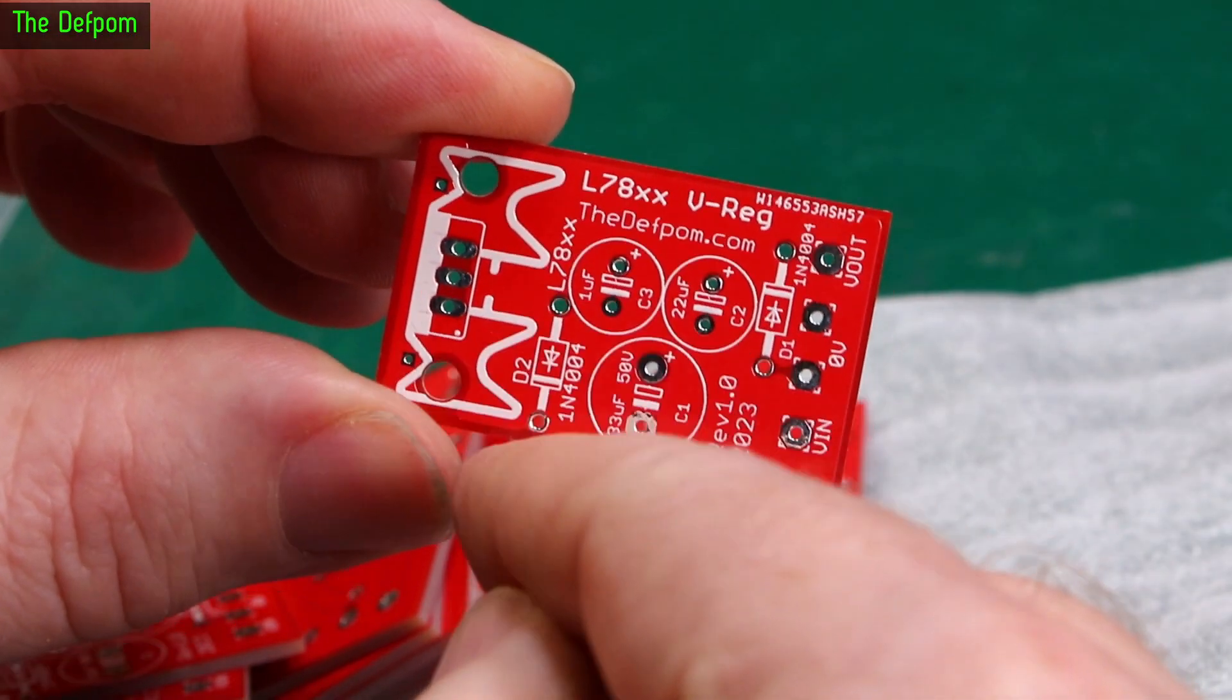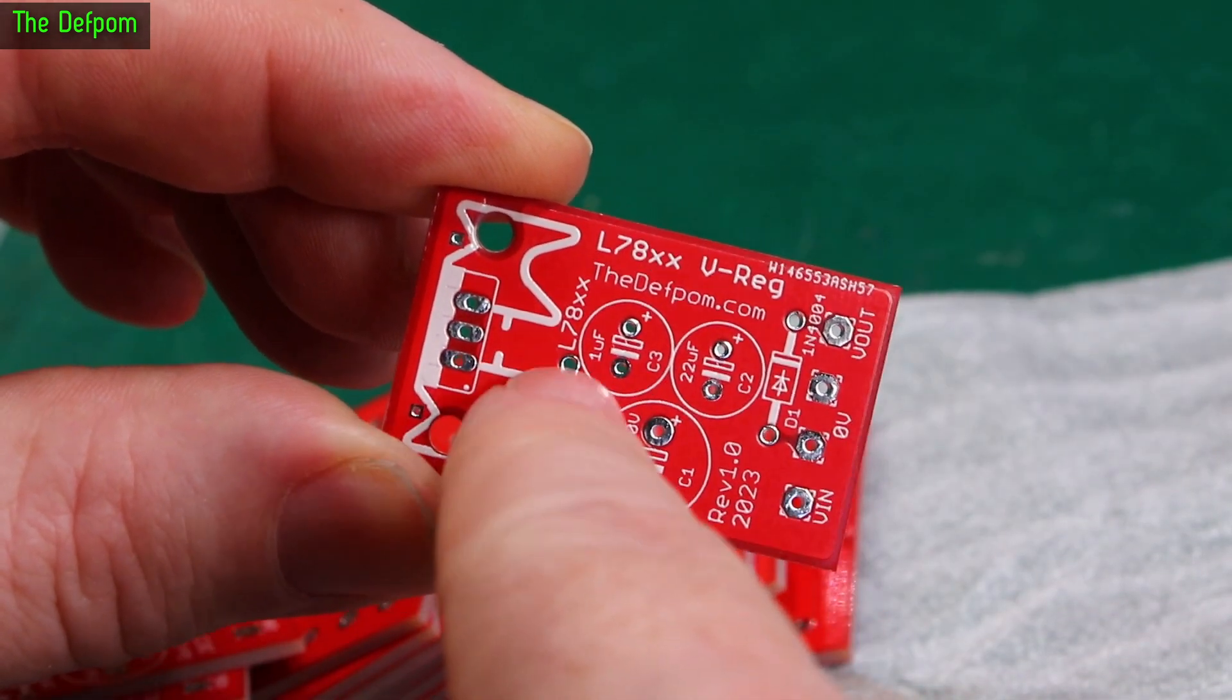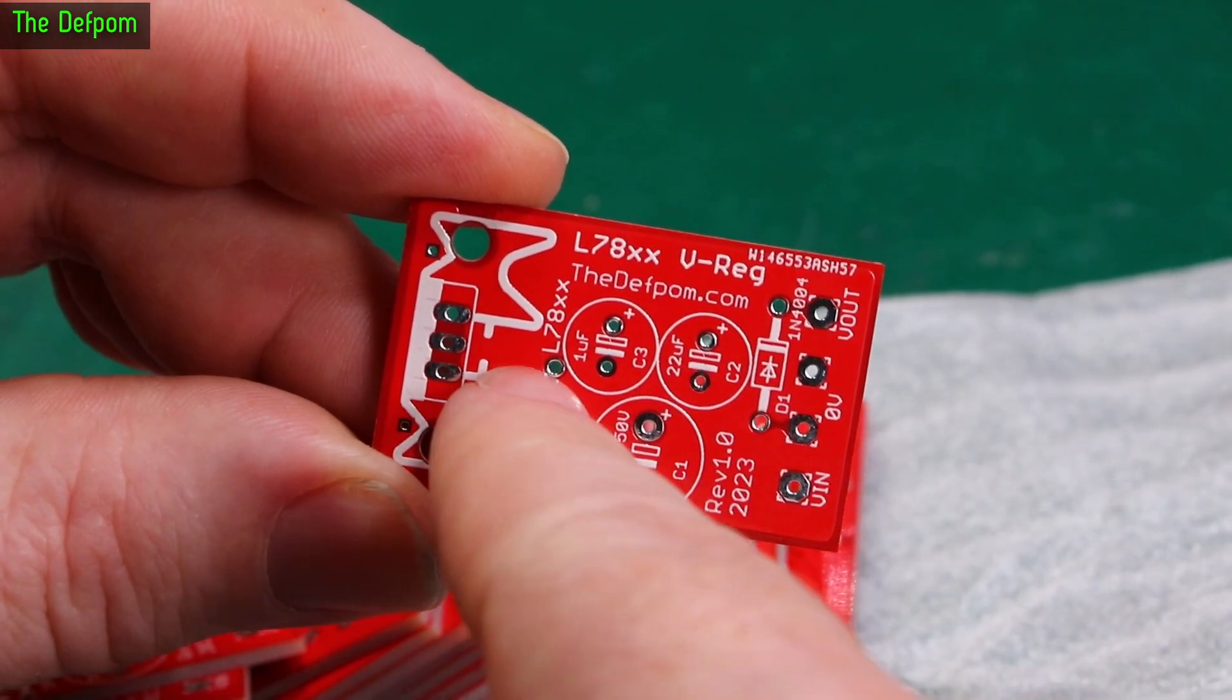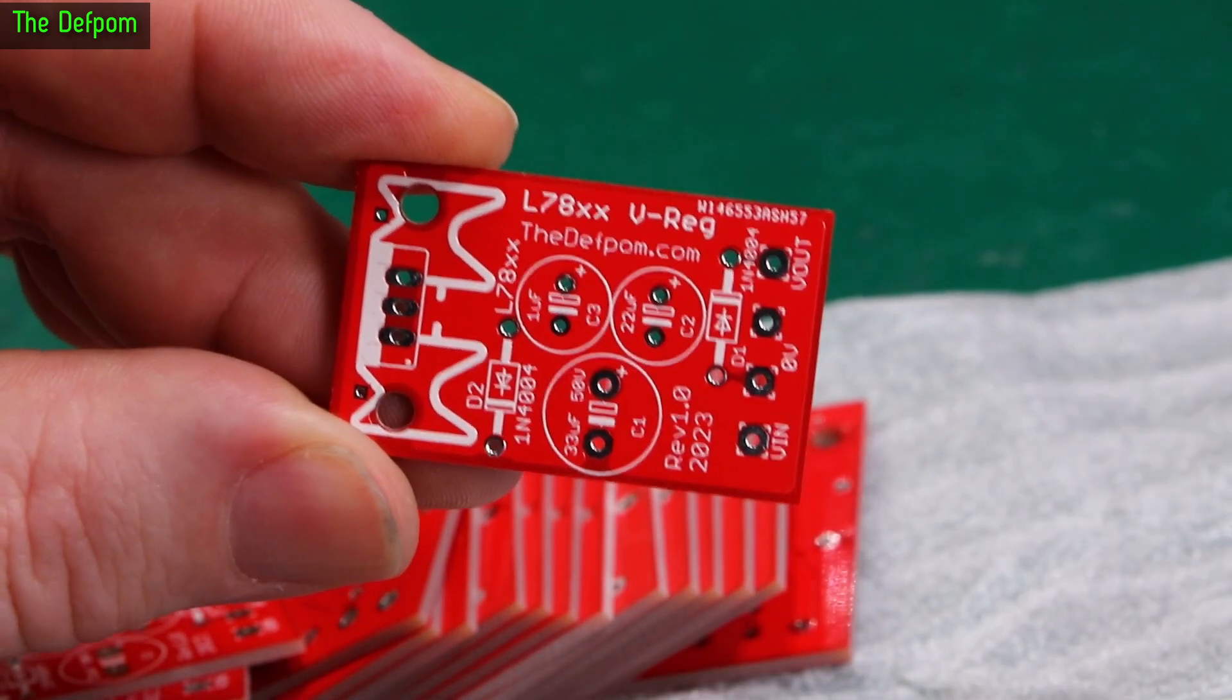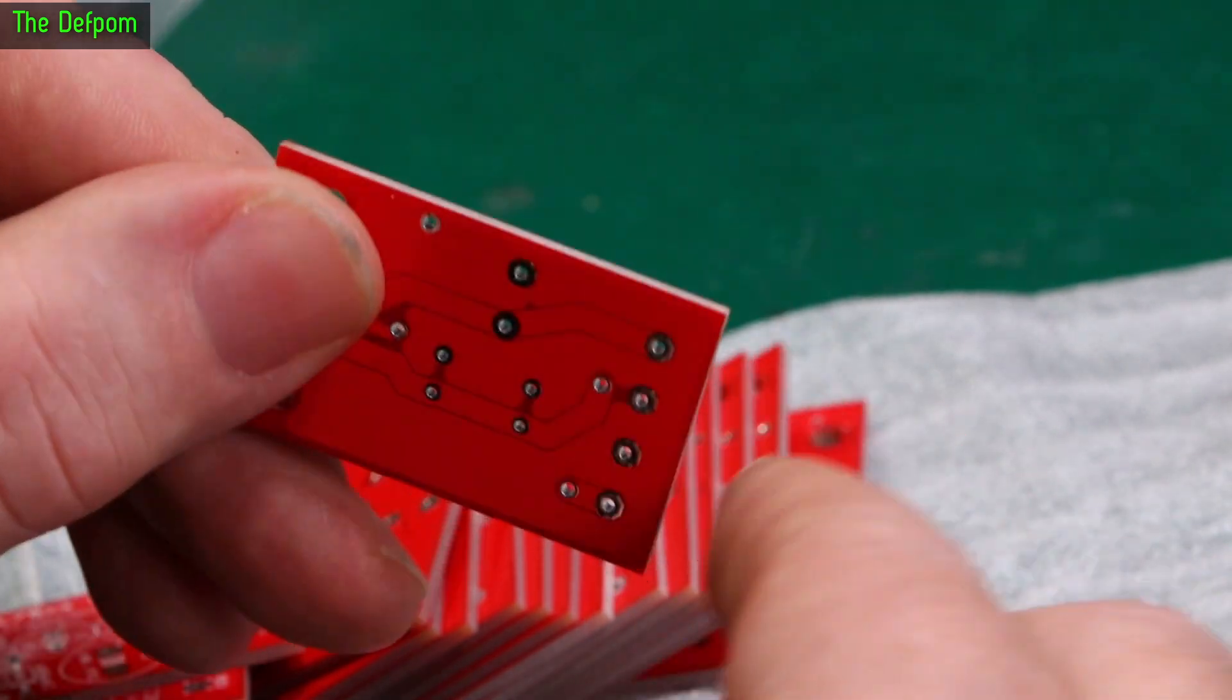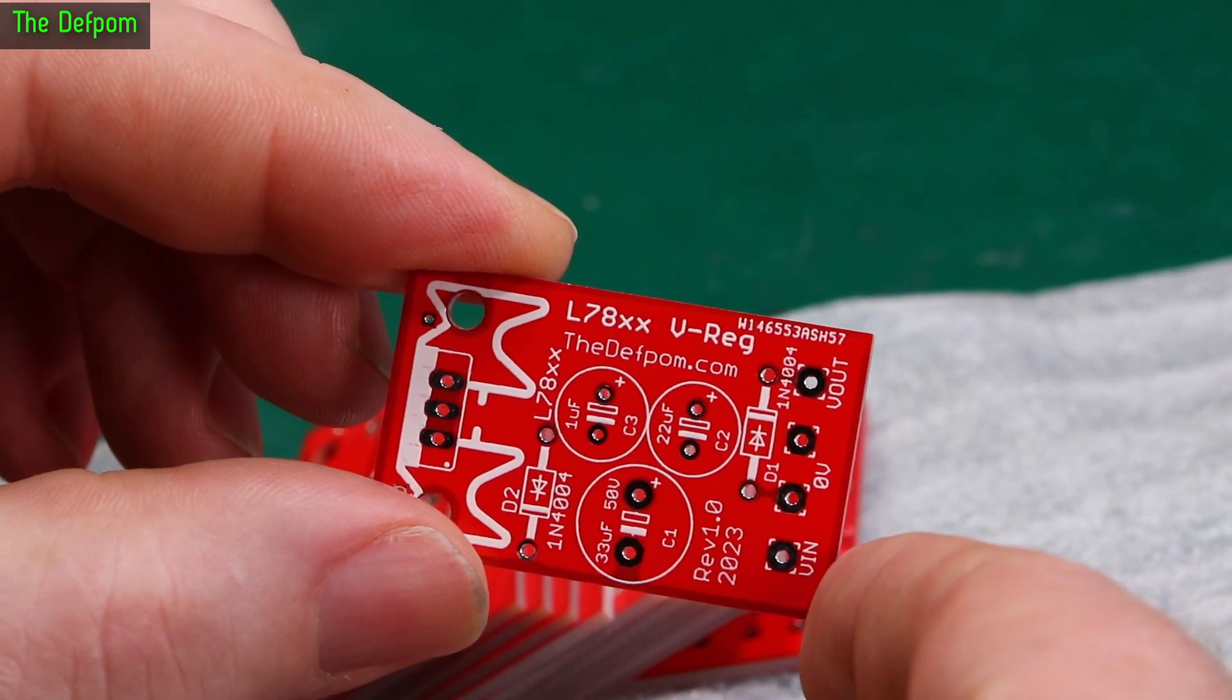You either put a link or a diode in that position. If you put a link in you get the voltage that the regulator is designed for. Say 7805 you'll get a 5 volt output. If you put a diode in here, say a silicon diode, so you've got a 0.6 volt drop across the diode, you'll get 5.6 volts instead. So you can actually just tweak the voltages very slightly if you need to. Because sometimes that's something you actually need to do.